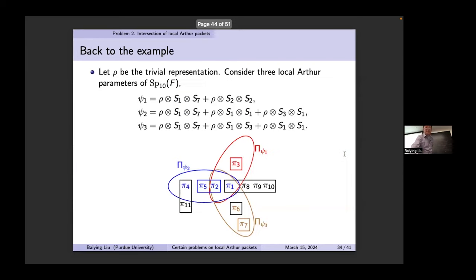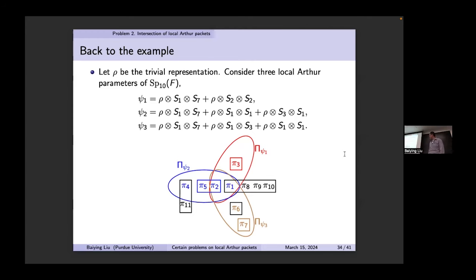This ψ^{max} has the best properties — whatever good property of the local packet, this is the local Arthur parameter that has the best one. Looking back at the example with the colors: π₁ and π₂ are blue, not red, which means for π₁ and π₂ lying in three packets, their local Arthur parameter z is just ψ₂. For π₆, z is ψ₃, and so on — that's the meaning of the colors.